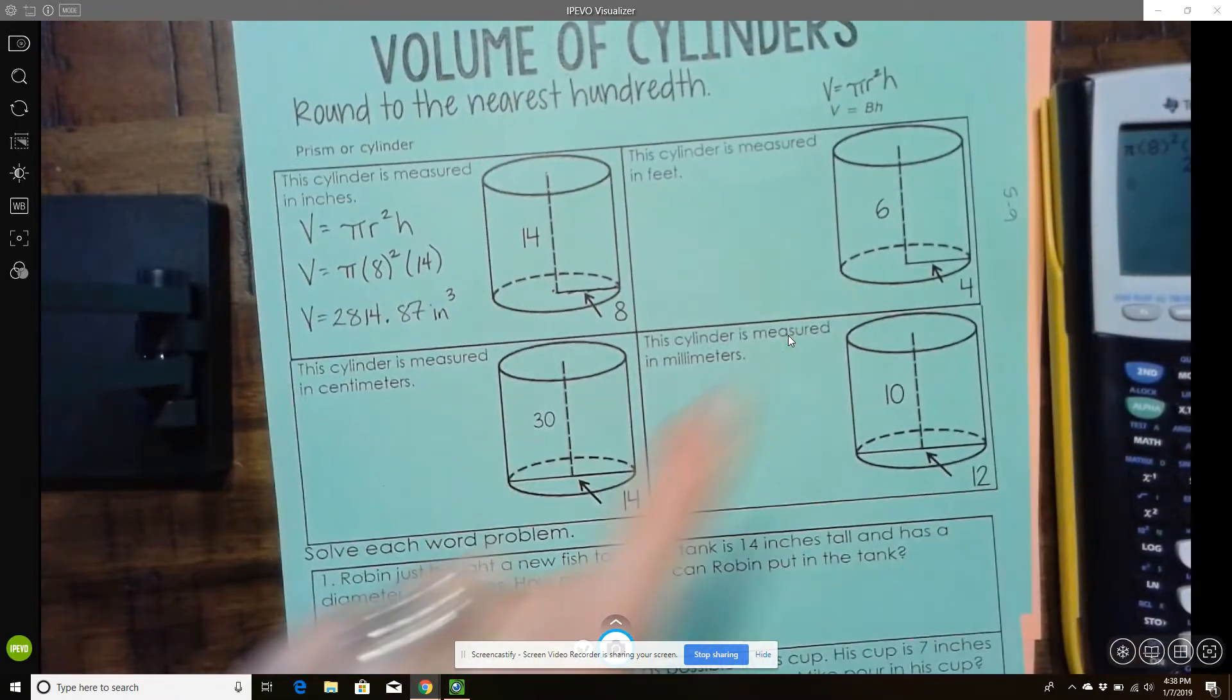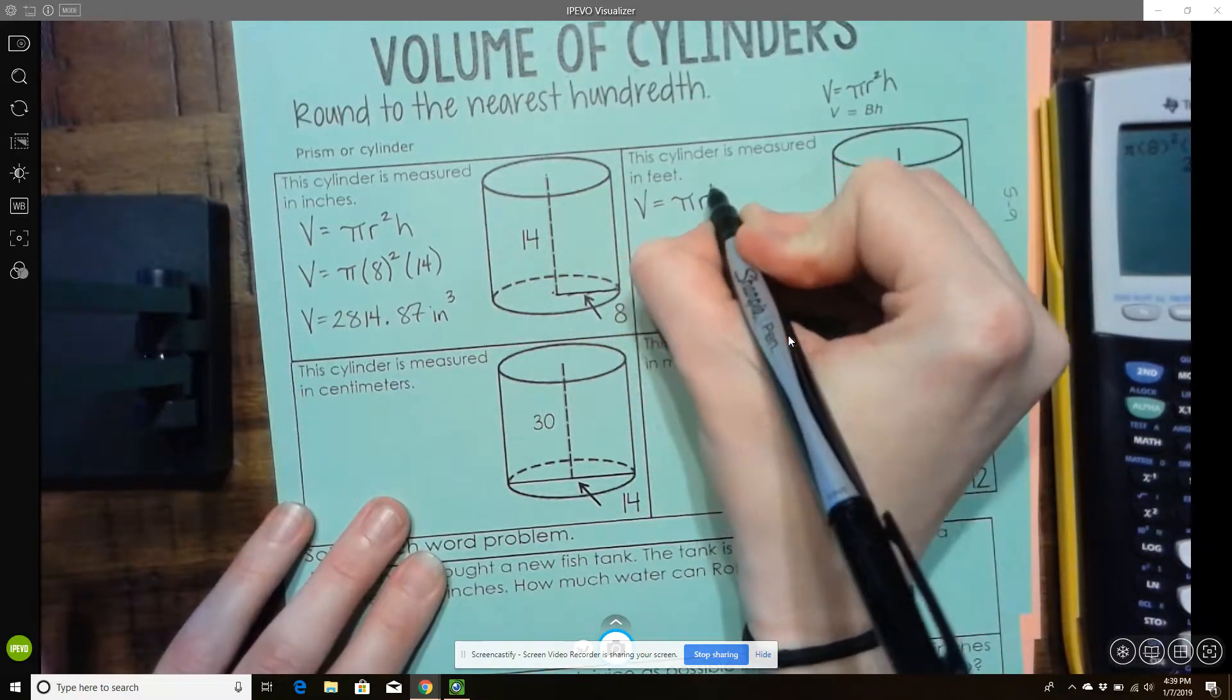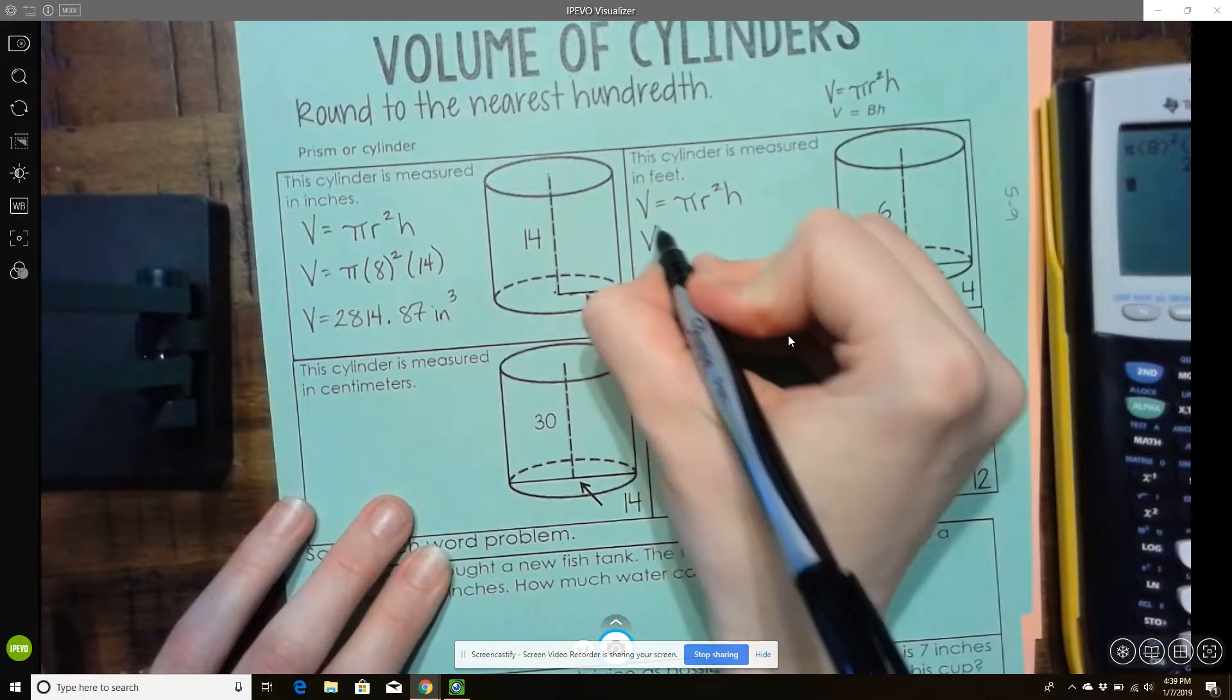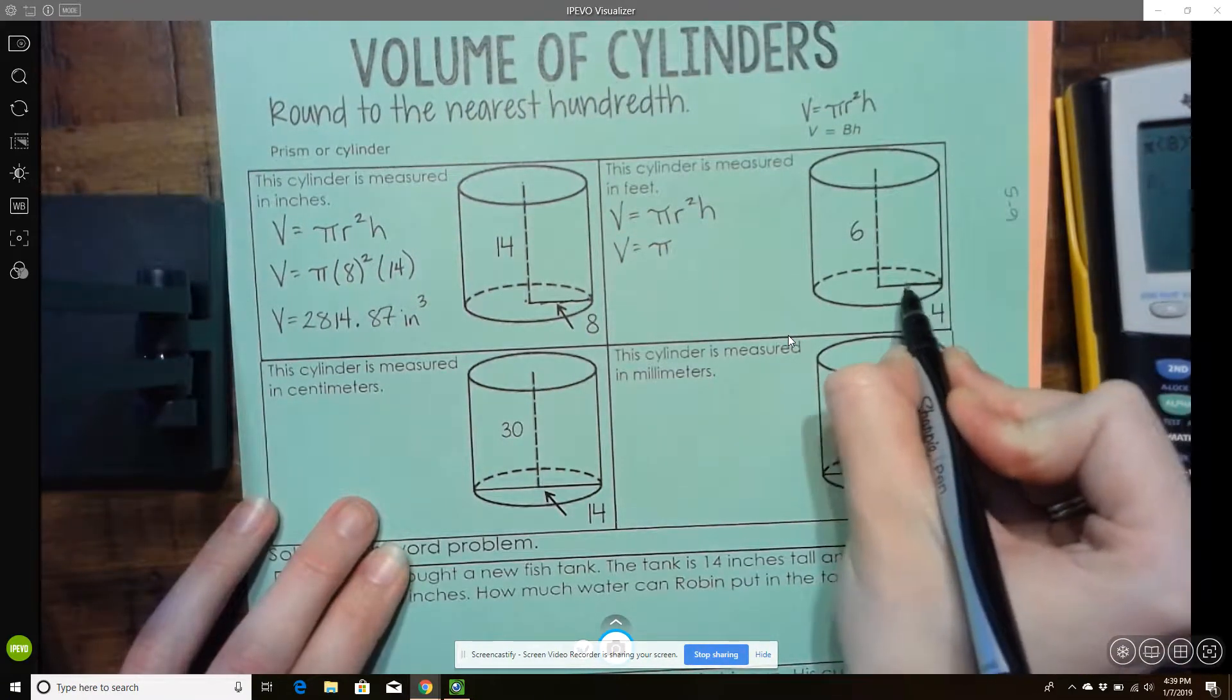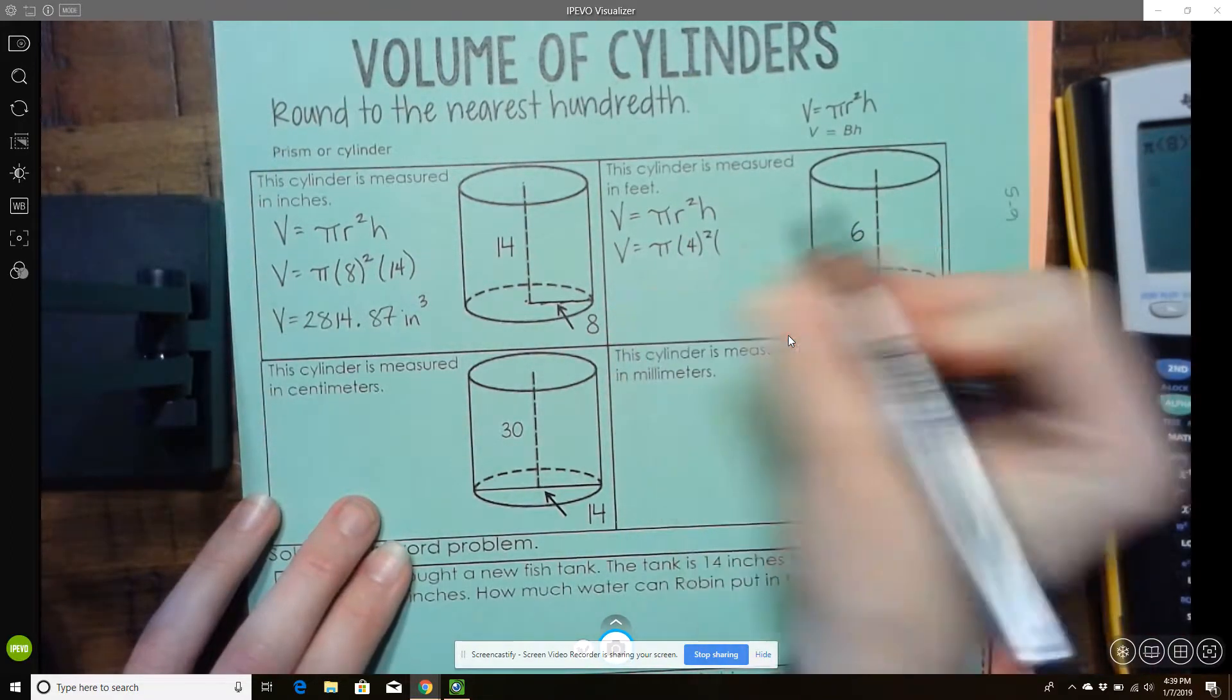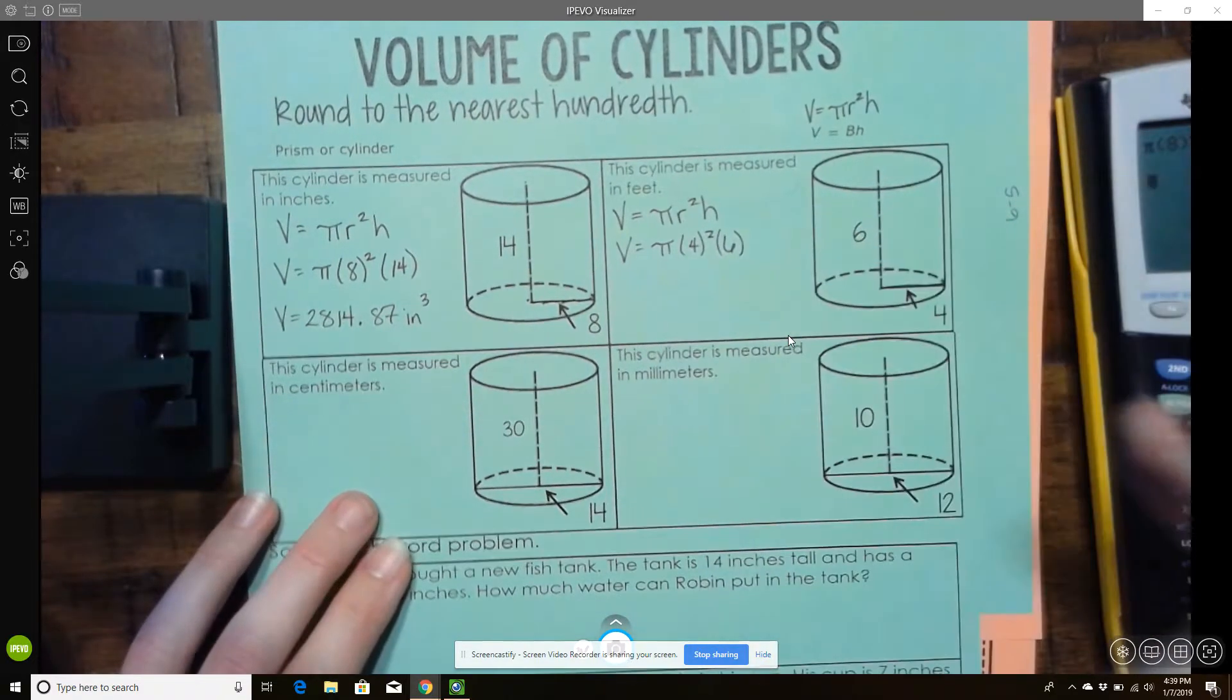All right, so here's another cylinder. So again, I'm going to write my formula, volume equals pi r squared h. I'm looking for the volume, so nothing to plug in there. The radius. So remember, the radius is halfway across the base of a circle. So that would be a 4. And then my height is the height of the figure. So a 6.